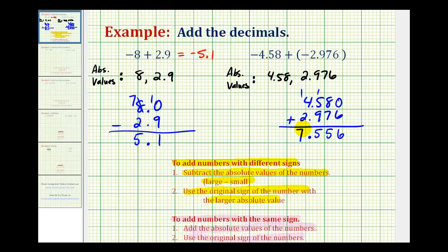But remember, we want to use the original sign, so the sum is actually negative 7.556, or negative 7 and 556 thousandths.